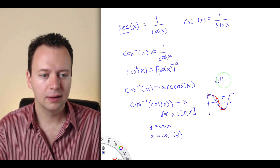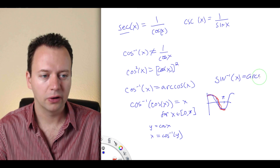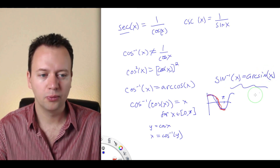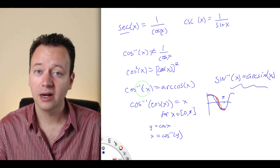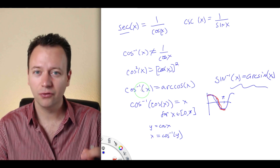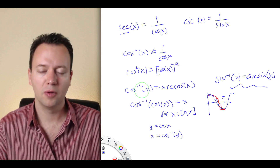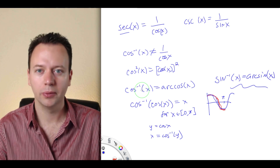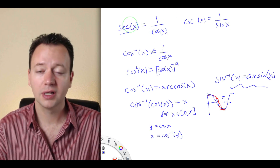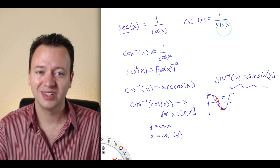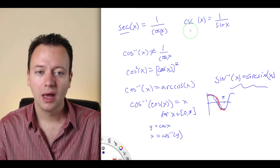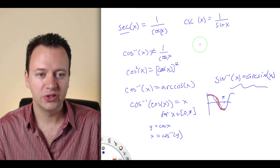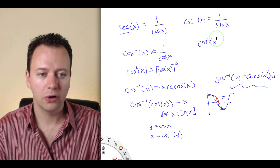Similarly, sine to the minus 1 of x represents the arc sine of x. So the minus 1 is always reserved for the inverse function to the trigonometric function. The reciprocal of cosine is secant, the reciprocal of sine is cosecant, and of course the reciprocal of tangent is called cotangent.